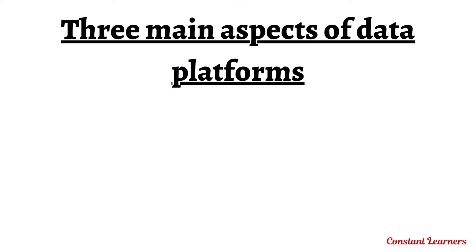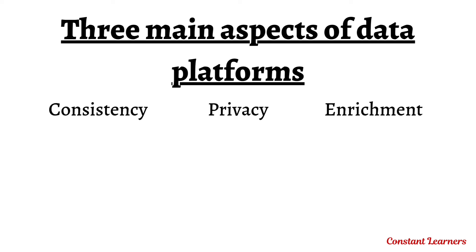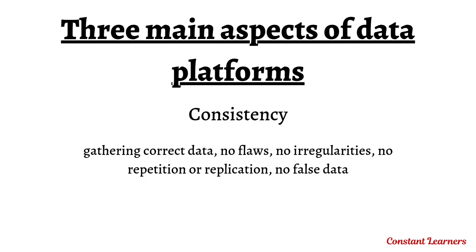This gives rise to three main aspects of big data platforms: consistency, privacy, and enrichment. Big data platforms must focus on the consistency of the data — gathering correct data with no flaws, no irregularities, no repetition or replication, and no false data. These are all important aspects with respect to correct data generation.